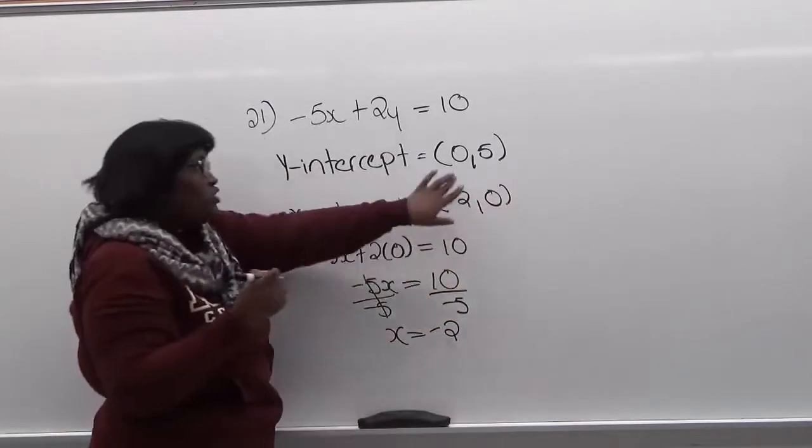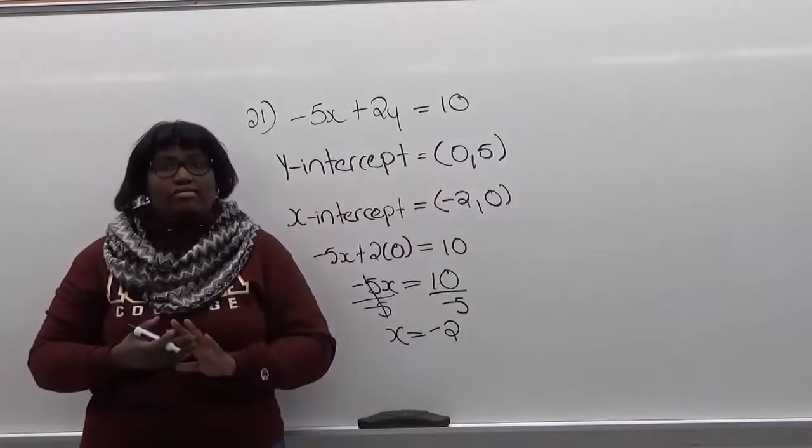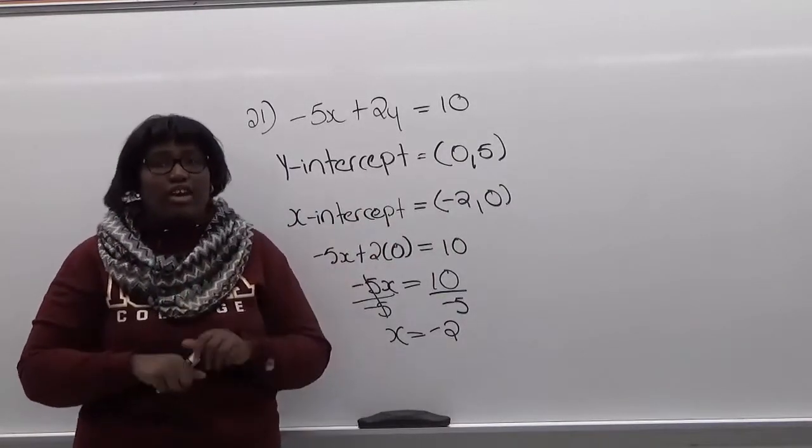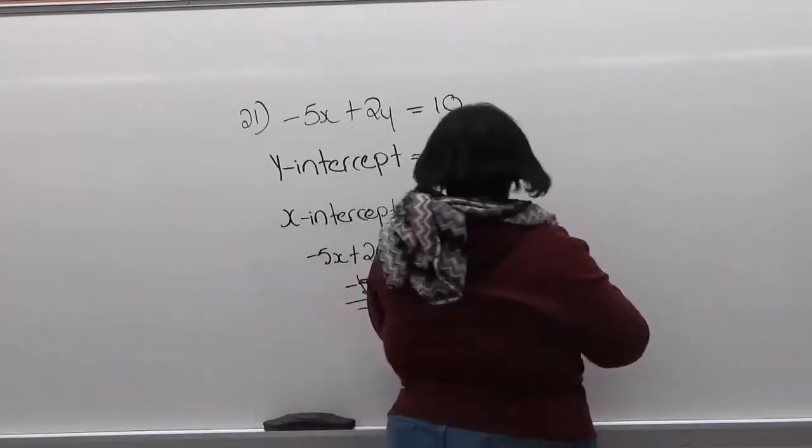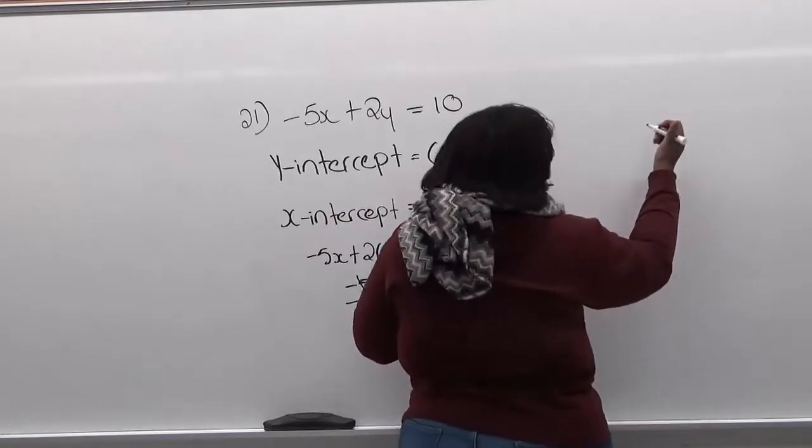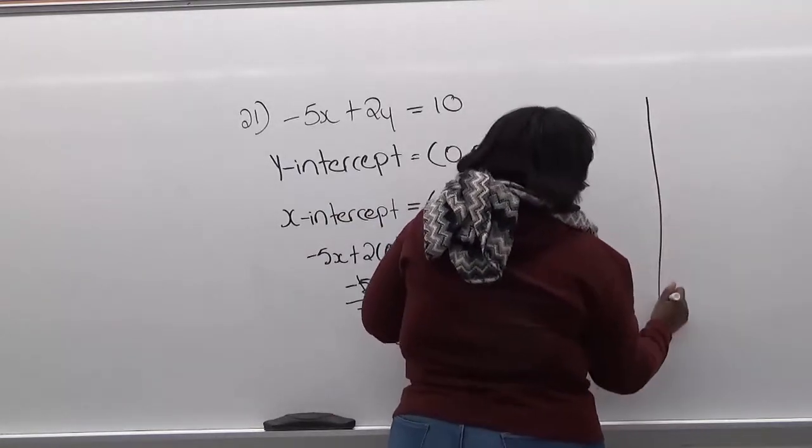And using these two points, you graph the two points and you connect their dots and that will be your graph of this line. Okay, so we're going to graph using these two intercepts. So first let's draw our table.